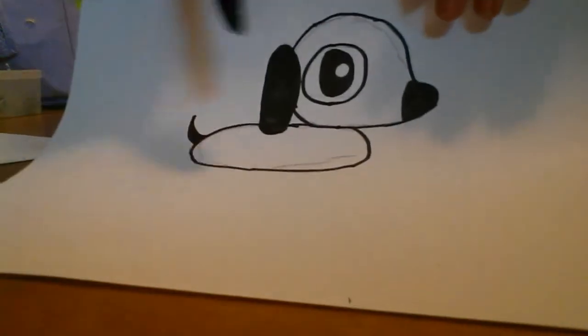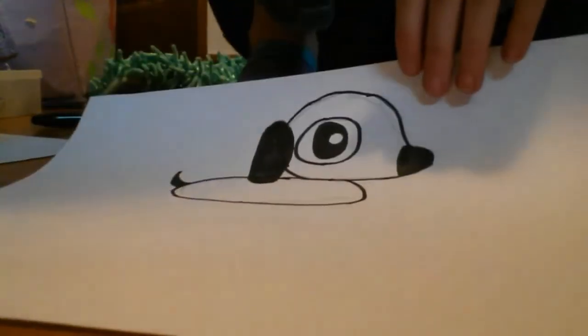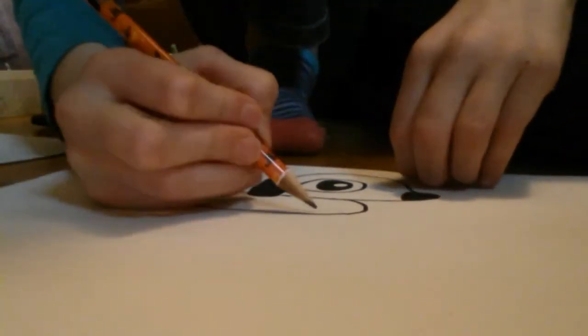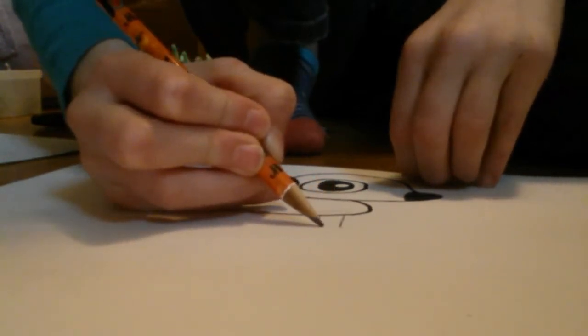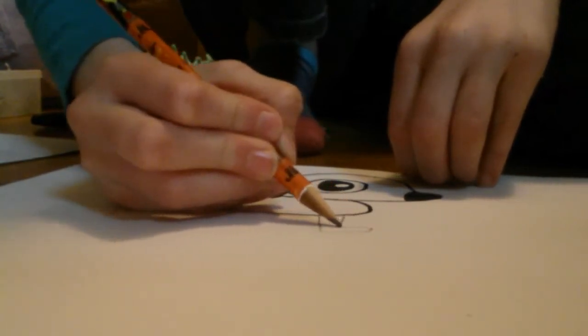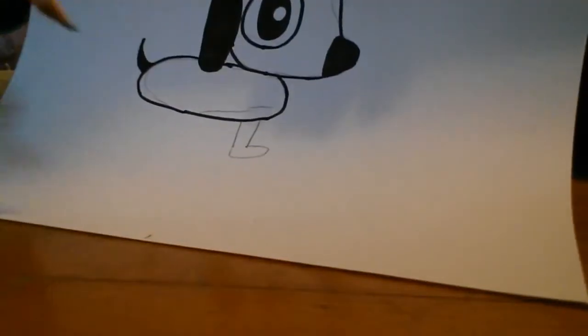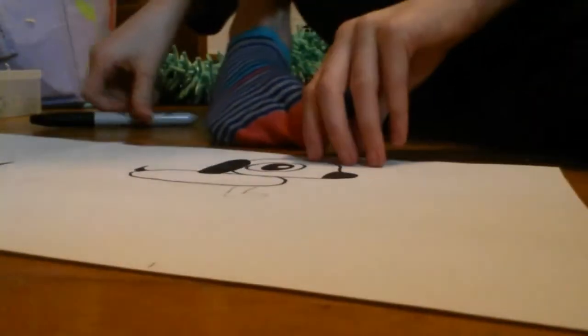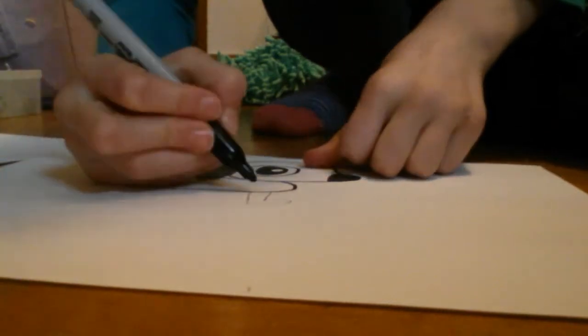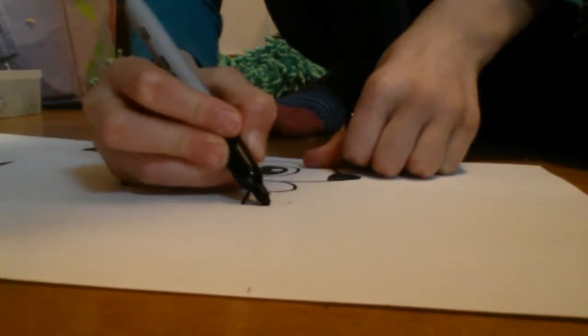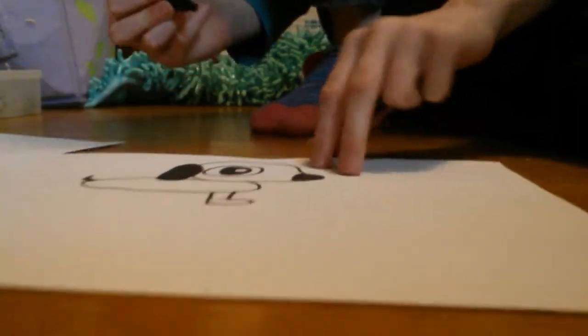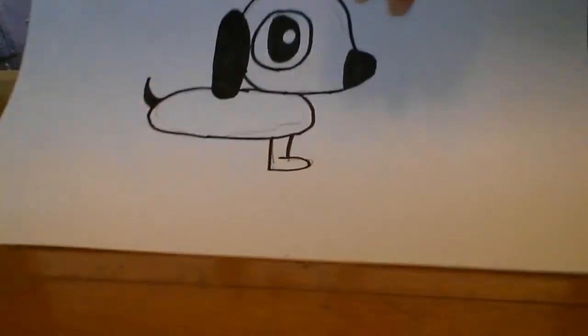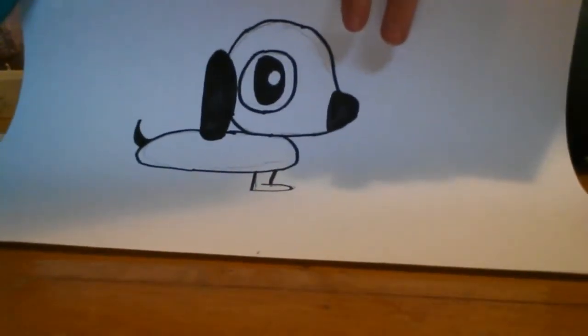Next we're going to make the legs. Just draw two sticks and then a curve for one leg. Then trace it. Do the same for the three other legs.